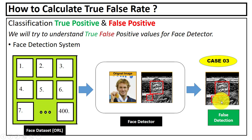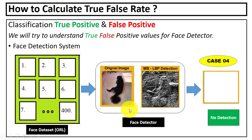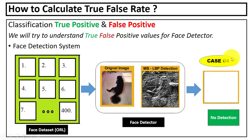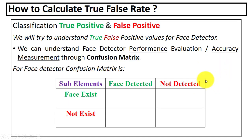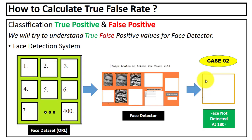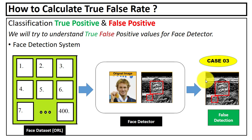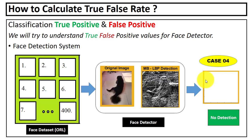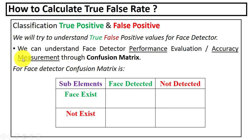That third case is a false detection. In the fourth case, we tested a digital image on the proposed face detector where there is no human face in the image — you can see no face, no detection. So we have four cases: first, face is detected; second, not detected; third, something else is detected as face; fourth, no face, no detection.